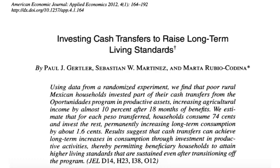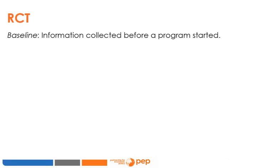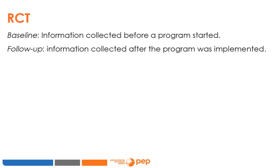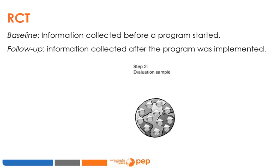The evaluators have information on eligible households from both before and after its implementation. Baseline data refers to information collected before the program started; follow-up data refers to information collected after the program was implemented. Only follow-up data is mandatory when conducting an RCT, however baseline data can really help to assess the impact of a program. The paper about PROGRESA analyzes data from 560 program-eligible communities.